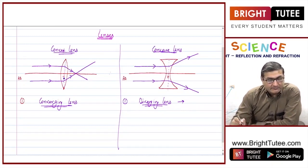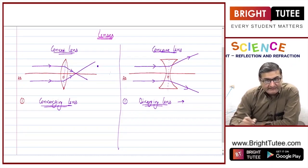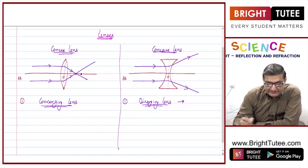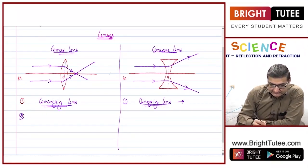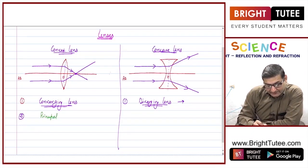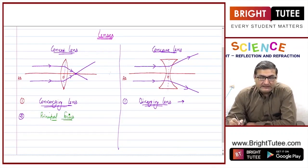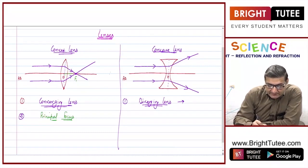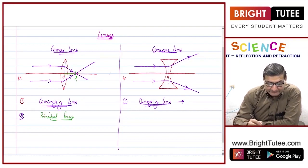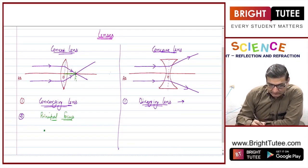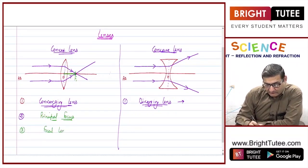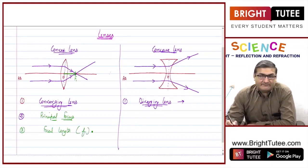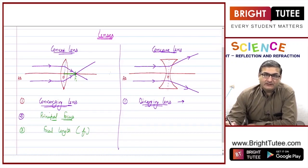These were the light rays coming parallel to the principal axis. After passing through the lens, when they converge, these light rays actually meet each other at a particular point on the principal axis. This particular point we term as the principal focus, marked as F1. This is the main focus of the convex lens. The distance from the optical center to this focus is termed as the focal length, represented as small f.